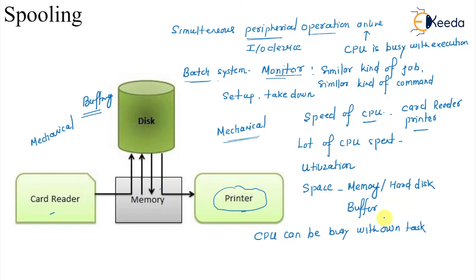That thing is basically called spooling. Simultaneous. CPU is busy with its own task and simultaneously it is reading into the buffer and from the disk it is writing into the buffer. Simultaneously peripheral operation online means CPU and peripheral device can act simultaneously.